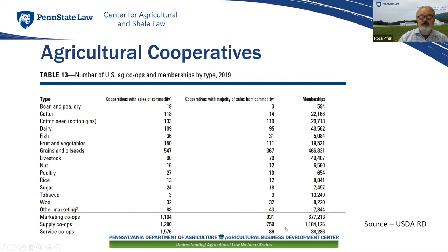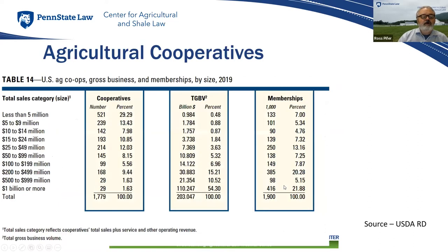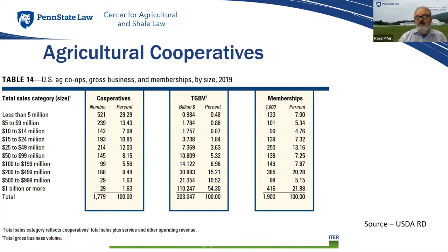This also shows the total number of cooperatives broken down by whether they are a marketing, supplier, or service cooperative. As far as size, cooperatives can be very large or relatively small. For small producers, organizing as a cooperative can be essential for capturing the market — artisan cheese producers, for example, may not be able to access the market unless they come together and organize through a cooperative.